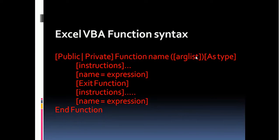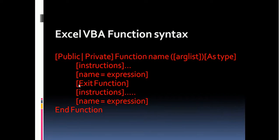The number of arguments depends on how you are using the function, and you can also specify the data type of arguments inside the parentheses. Inside the function there should be some instructions that define what the function does, and finally an output should be assigned to the function name. If you want to exit the function early, you can use the 'Exit Function' command, which terminates the function at that point and returns whatever value was captured just before it; otherwise it executes fully and returns the final expression.